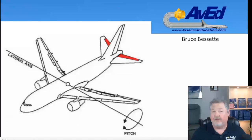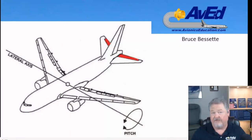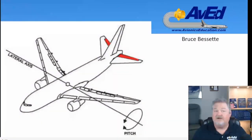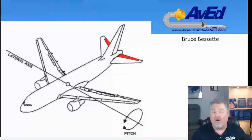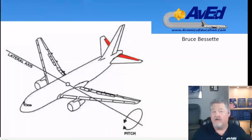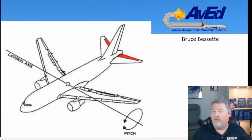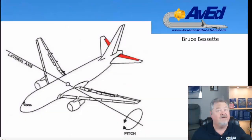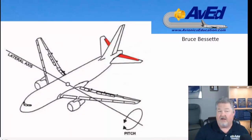A two-channel autopilot has all the capability of the one channel, but now we add a second channel around the aircraft's lateral axis. This axis rotates the aircraft in the pitch moment and is connected to the aircraft's elevators. The most basic pitch function is altitude hold, which was basically the only vertical navigation available in some of the earlier autopilots. They would simply lock on to a pressure altitude that the pilot selects when you engage altitude hold.